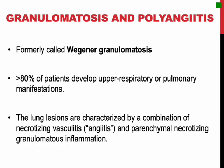Granulomatosis with polyangiitis, formerly called Wegener granulomatosis: more than 80% of patients develop upper respiratory or pulmonary manifestations at some time in their course. The lung lesions are characterized by a combination of necrotizing vasculitis and parenchymal necrotizing granulomatous inflammation. Signs and symptoms stem from involvement of the upper respiratory tract — chronic sinusitis, epistaxis, nasal perforation — and the lungs — cough, hemoptysis, and chest pain. PR3-ANCA, the antineutrophil cytoplasmic antibodies, are present in close to 95% of cases.